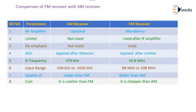Finally, the very important point is cost. Cost-wise, AM receivers are more costly than FM receivers. FM receivers are cheaper than AM receivers. This is all about the comparison of the FM receiver with AM receiver. Thank you for watching.